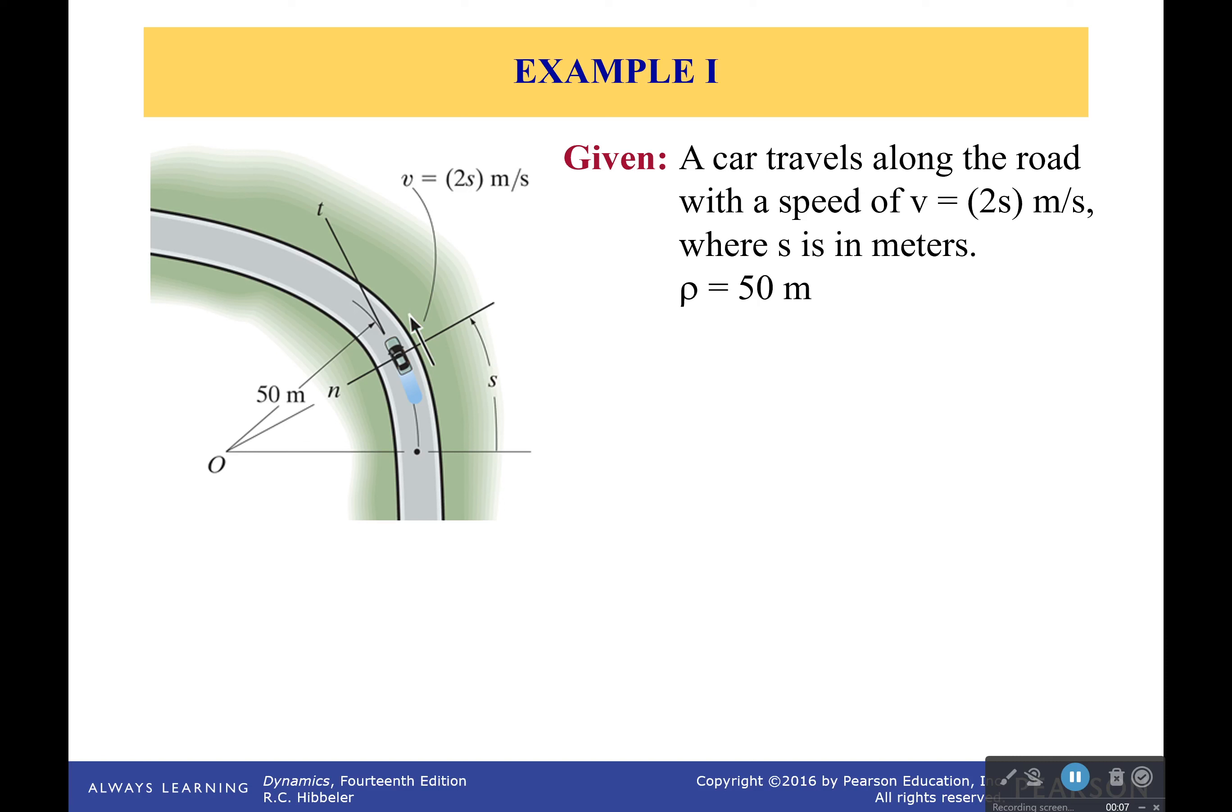What do we have? Well, we have a car and it's traveling along this road. The speed is v equals 2s meters per second, where s is in meters. So the further it goes along the path, the faster it's going. We also know that this distance to the center of curvature is 50 meters and we're considering that to be constant, at least for this curve.